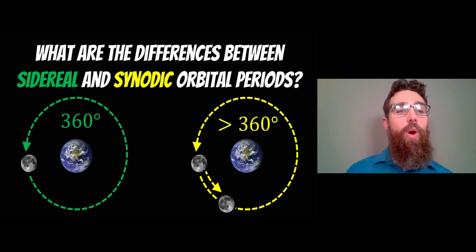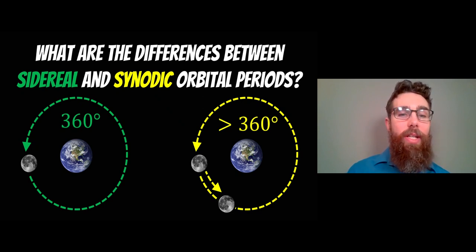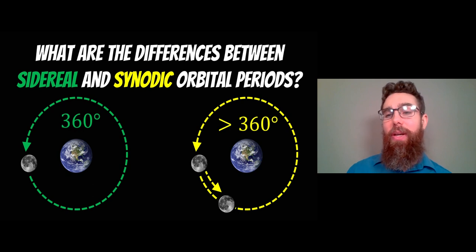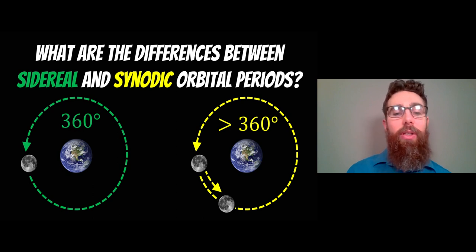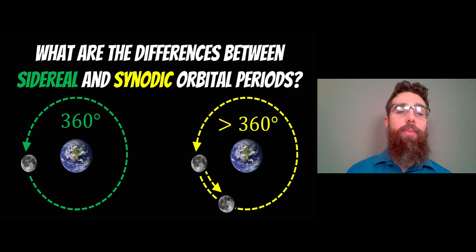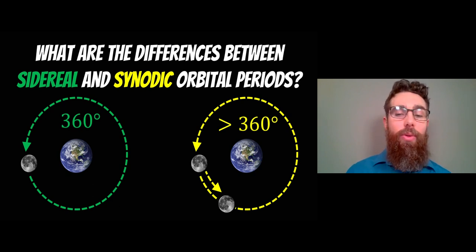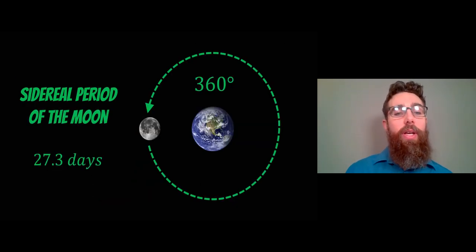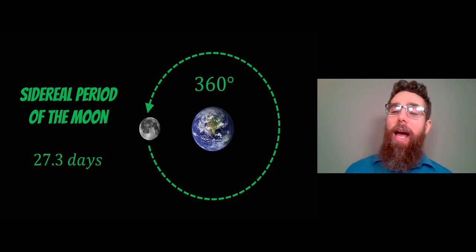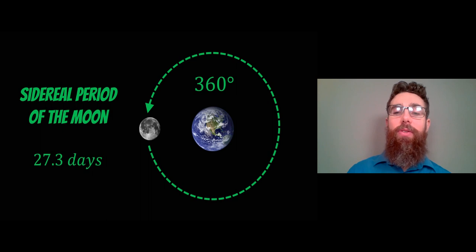Welcome to this video where we're going to look at the difference between the sidereal period and the synodic period. We're going to use the Earth-Moon system as an example, or more specifically, the orbit of the Moon. Let's start with the sidereal period. For the Moon, it's about 27.3 days, and it's one full orbit around the Earth.